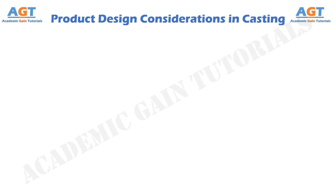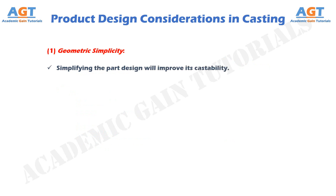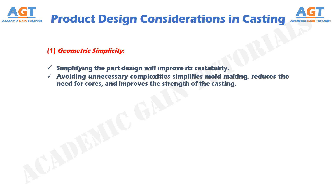Number 1: Geometric Simplicity. Simplifying the part design will improve its castability. Avoiding unnecessary complexities simplifies mold making, reduces the need for cores, and improves the strength of the casting.